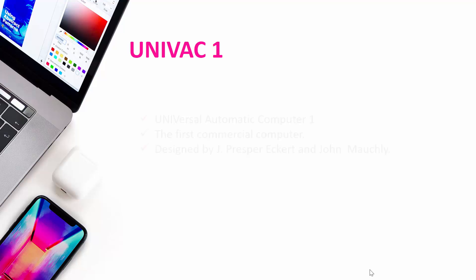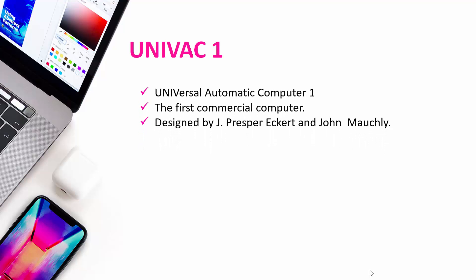Next is UNIVAC 1 — Universal Automatic Computer 1. It was the first commercial computer, meaning it was the first computer designed for commercial use. It was designed by Jay Presper Eckert and John Mauchly.